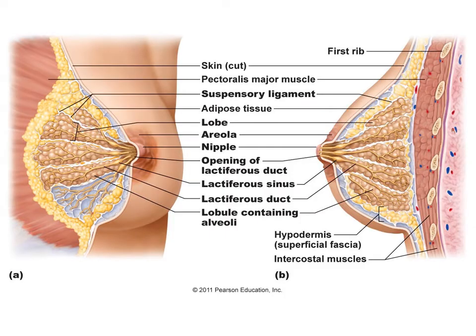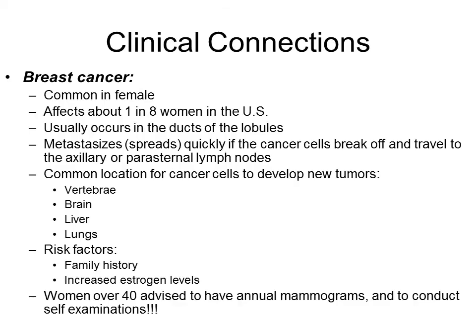As you can see here, there's the whole lobe structure. There are several lobes, each one having ducts that drain the milk. They all converge at the nipple so that when the infant is suckling, it is able to get milk.